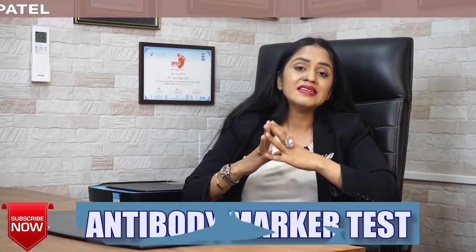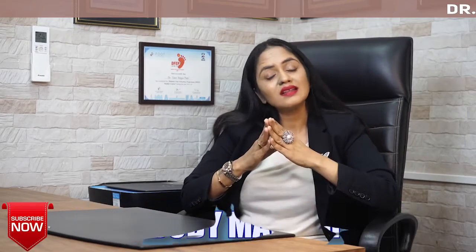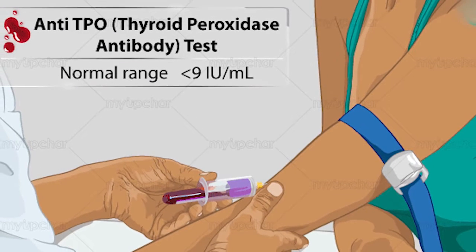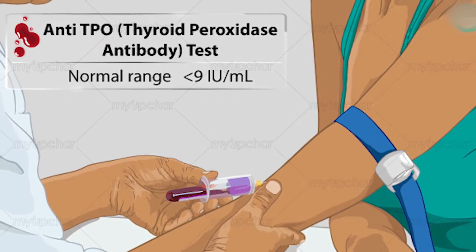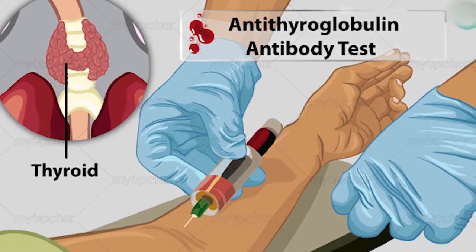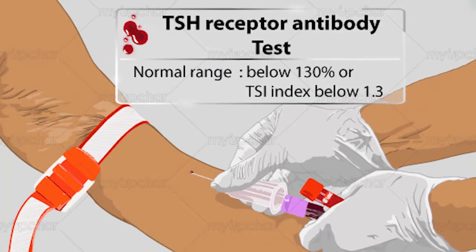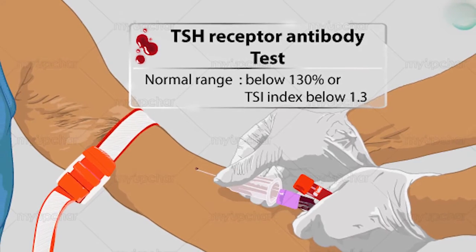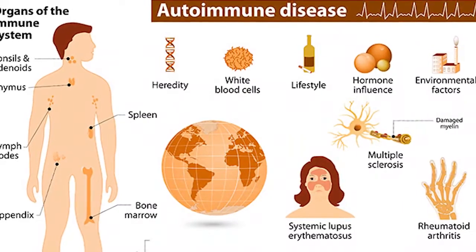Third, we do antibody marker testing. The antibody markers we check include: first, anti-TPO antibodies (antithyroid peroxidase); second, antithyroglobulin antibodies; and third, TRAB — that is, TSH receptor antibodies. If these antibodies are positive, they mainly indicate that your thyroid problem has an autoimmune origin.